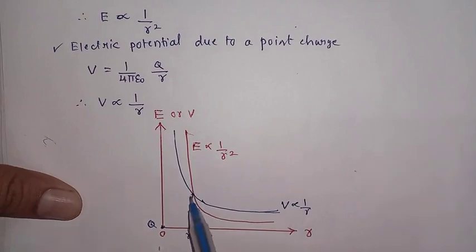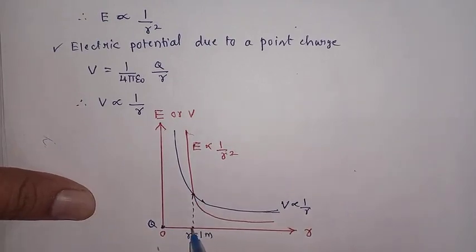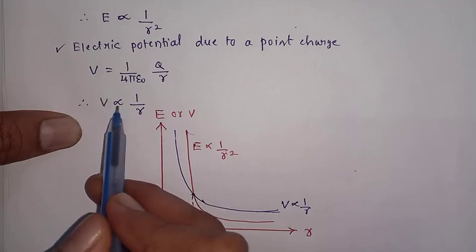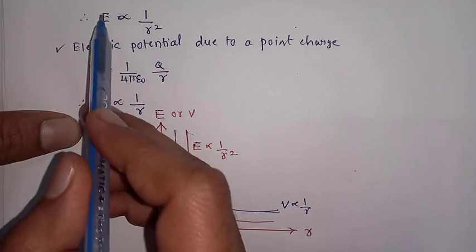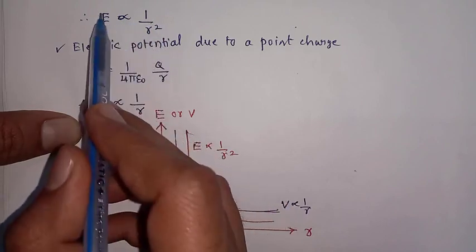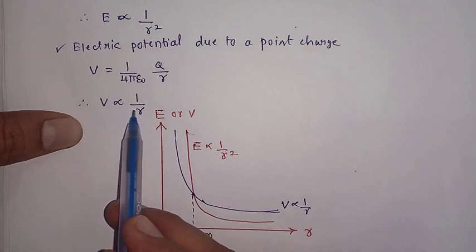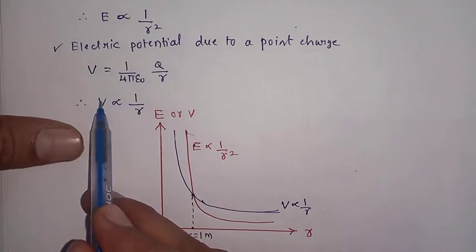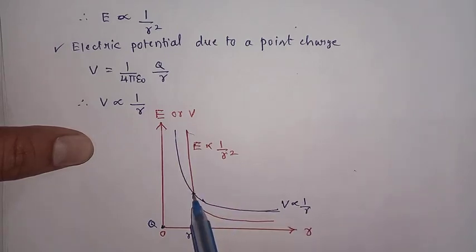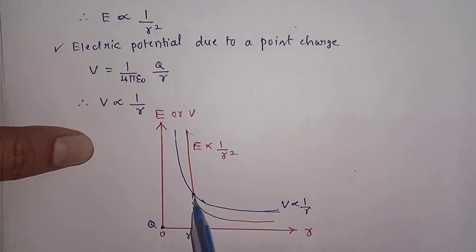Therefore the two curves meet at one meter. If the distance is less than one meter — say r equals 0.1 meters — then V is inversely proportional to 0.1, whereas E is inversely proportional to r squared, which is 0.01. Since the denominator is smaller for E, the electric field has a greater magnitude. So at distances less than one meter, electric field has higher magnitude than electric potential.